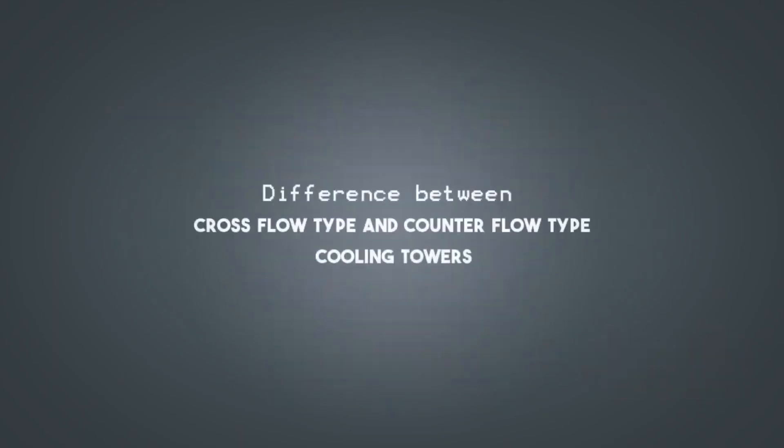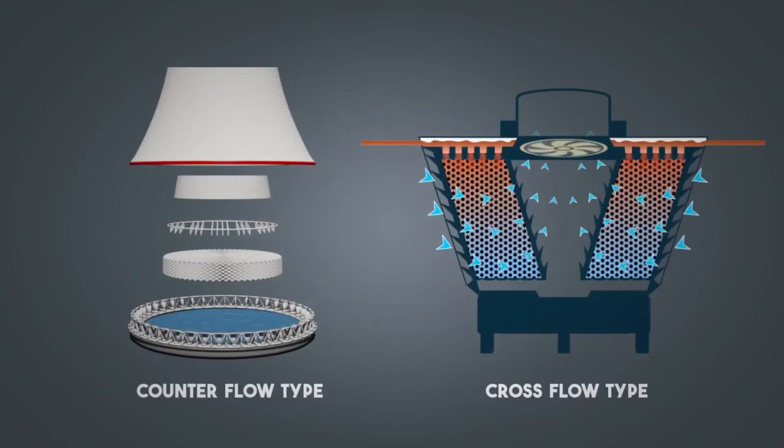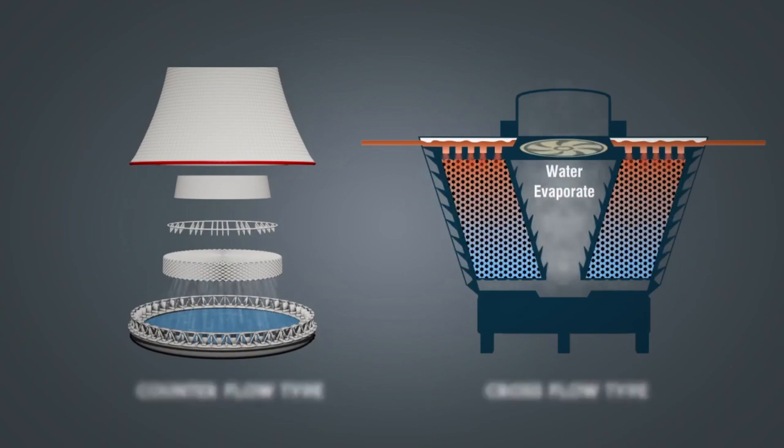Difference between cross flow type and counter flow type cooling towers. The discussion will remain incomplete until we discuss about the difference between these two types of cooling tower. In cross flow type cooling tower, air flow is directed perpendicular to the water flow, whereas in counter flow type cooling tower, air flow is directly opposite of the water flow.